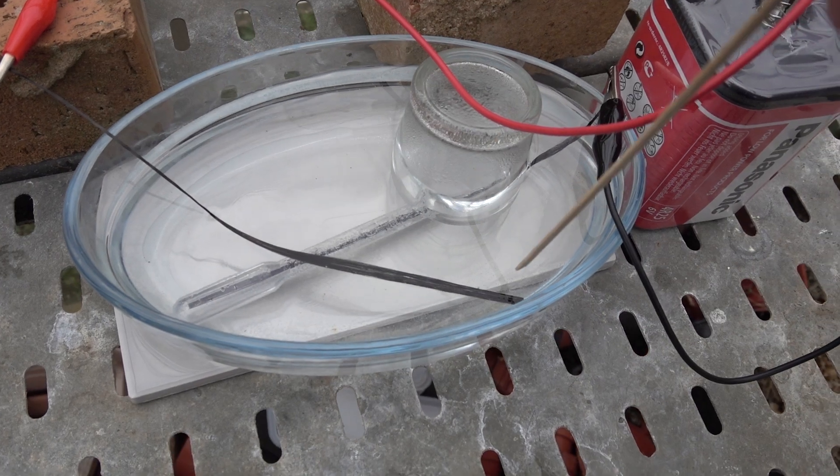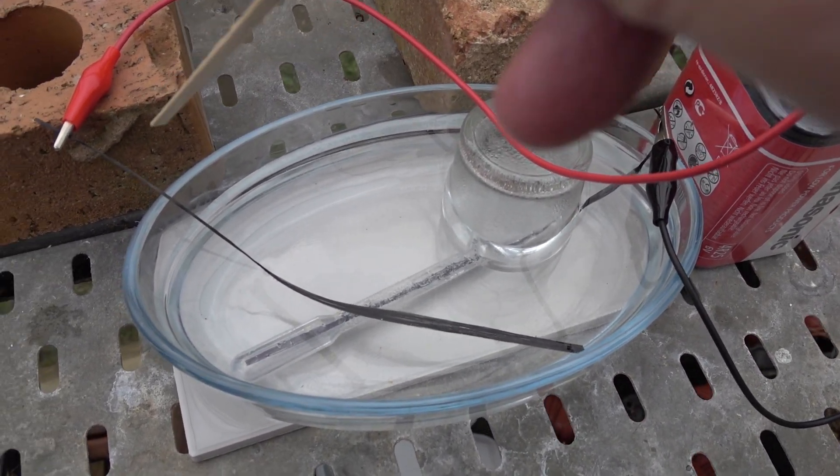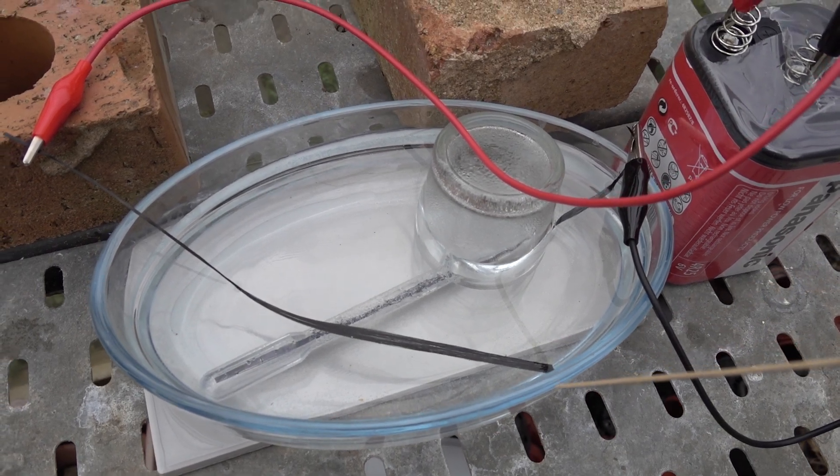The carbon electrode connected to the positive terminal on the battery, the anode, is simply lying across the surface.